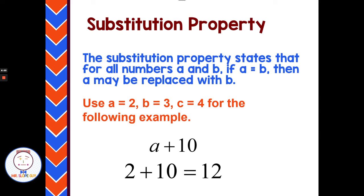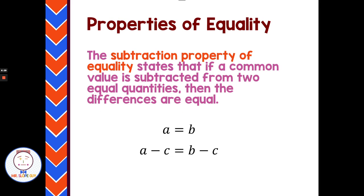The substitution property states that for all numbers A and B, if A equals B, then A may be replaced with B. For example, if A is 2, B is 3, and C is 4, I could have a problem like A plus 10 and just replace A with 2 to get 2 plus 10 equals 12. That's a simple replacement, particularly for a variable and a number — you see it very often.